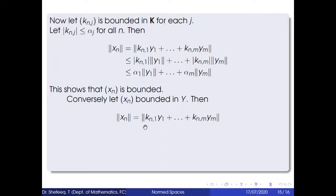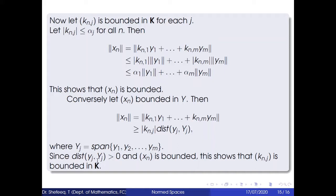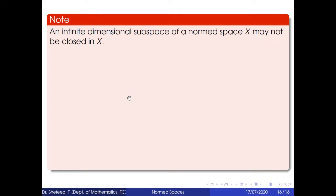Then ‖xₙ‖ = ‖kₙ₁y₁ + ... + kₙₘyₘ‖ ≥ |kₙⱼ| · dist(yⱼ, Ŷⱼ) by part (a), where Ŷⱼ = span{yᵢ : i ≠ j}. Since dist(yⱼ, Ŷⱼ) > 0 and xₙ is bounded, it follows that kₙⱼ is also bounded in 𝕂 for each j.